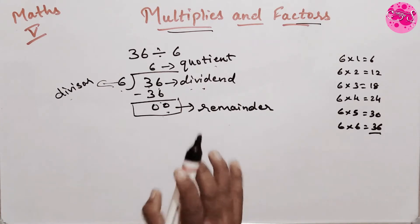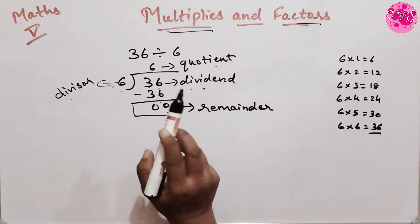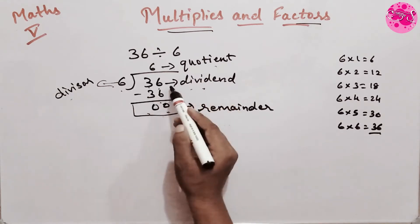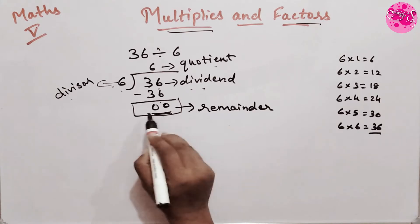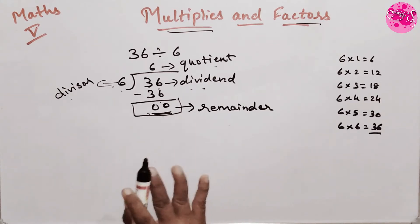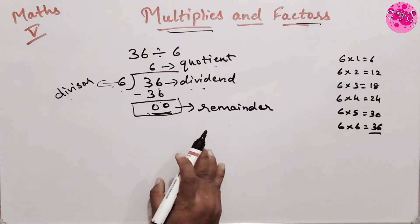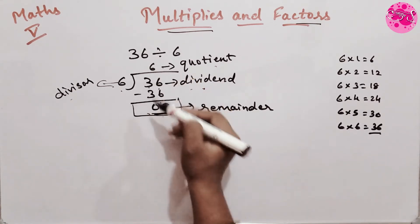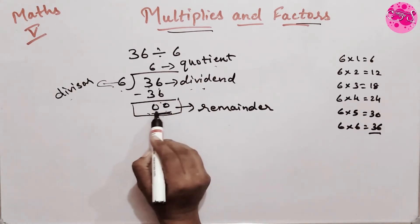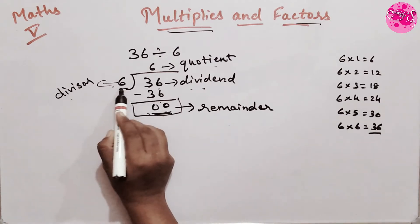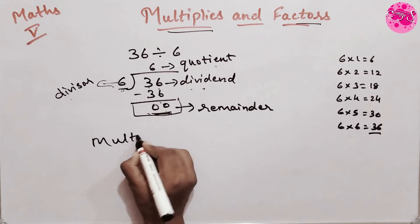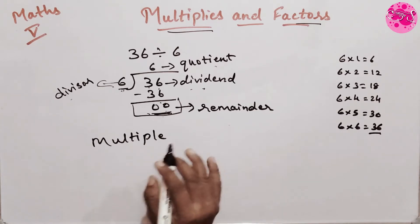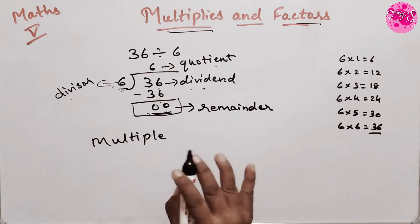Children, when the division of a dividend leaves no remainder — that is, when after dividing the number we get 0 as the remainder — the dividend is said to be a multiple of the divisor. In short, when the remainder is 0, the dividend is called a multiple of the divisor. You can have any number of multiples of a number.